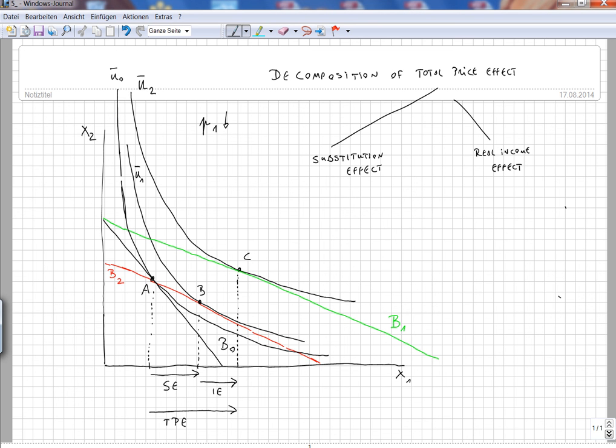So the consumer will substitute into the first good. The substitution effect goes to the right because the second good is substituted into the first good, as the second good becomes more expensive relatively. If the price goes down, the substitution effect goes to the right. If the price goes up, the substitution effect always goes to the left. That's important to understand and keep in mind.